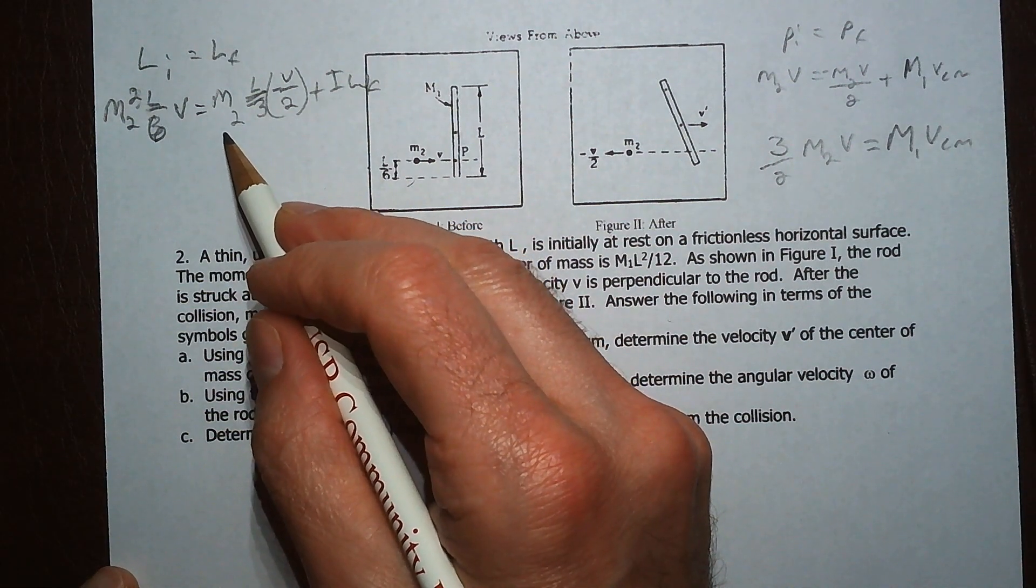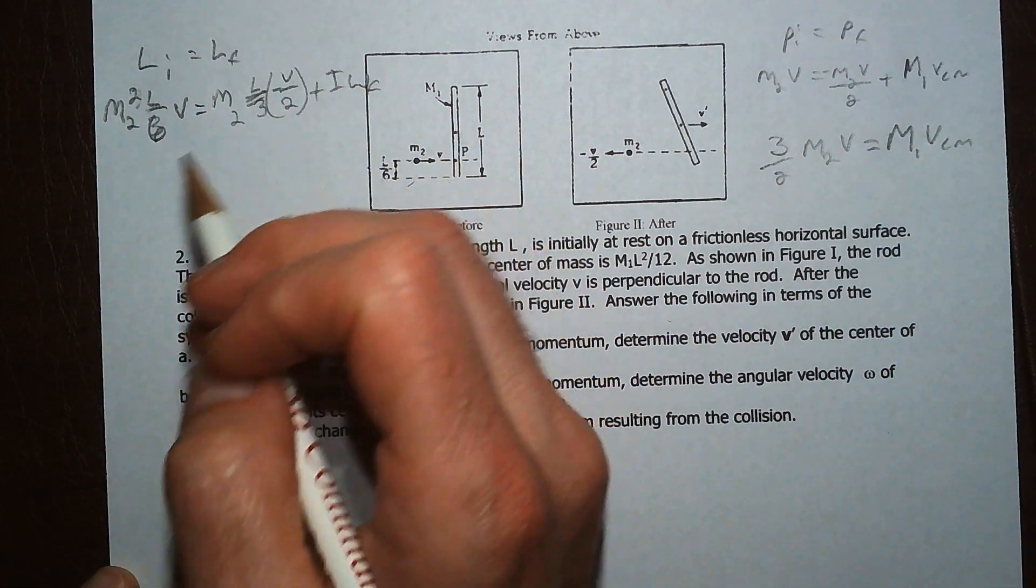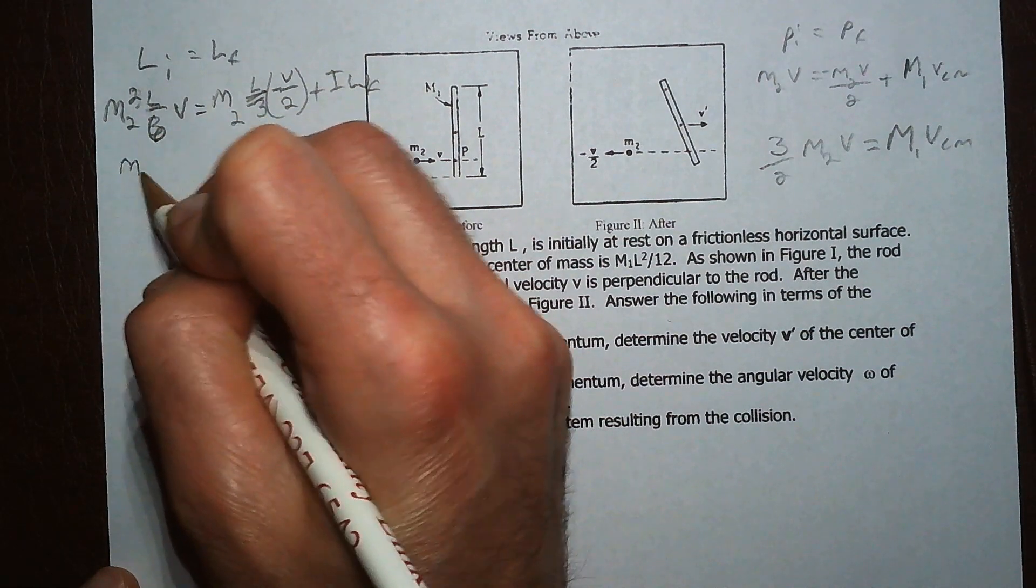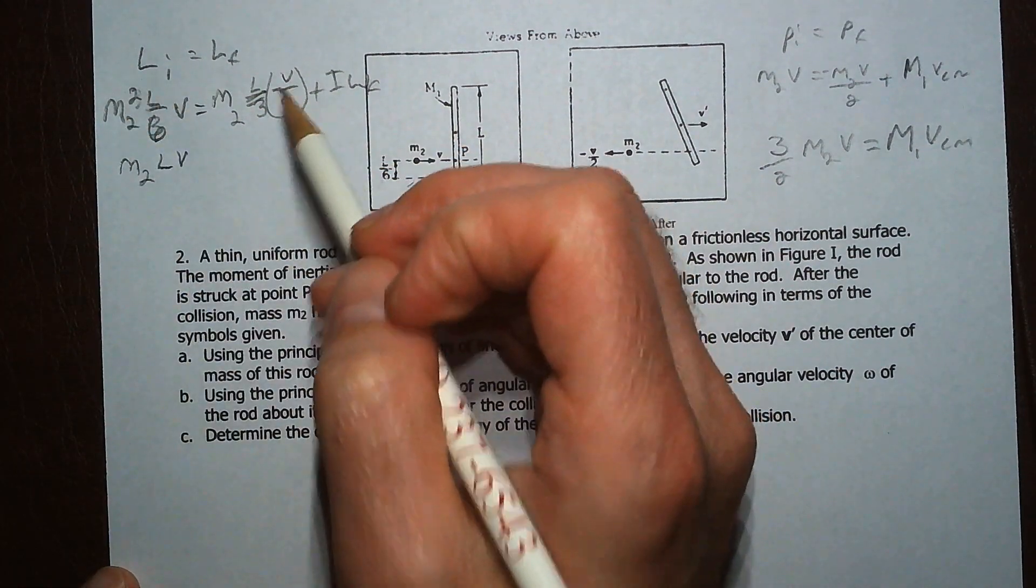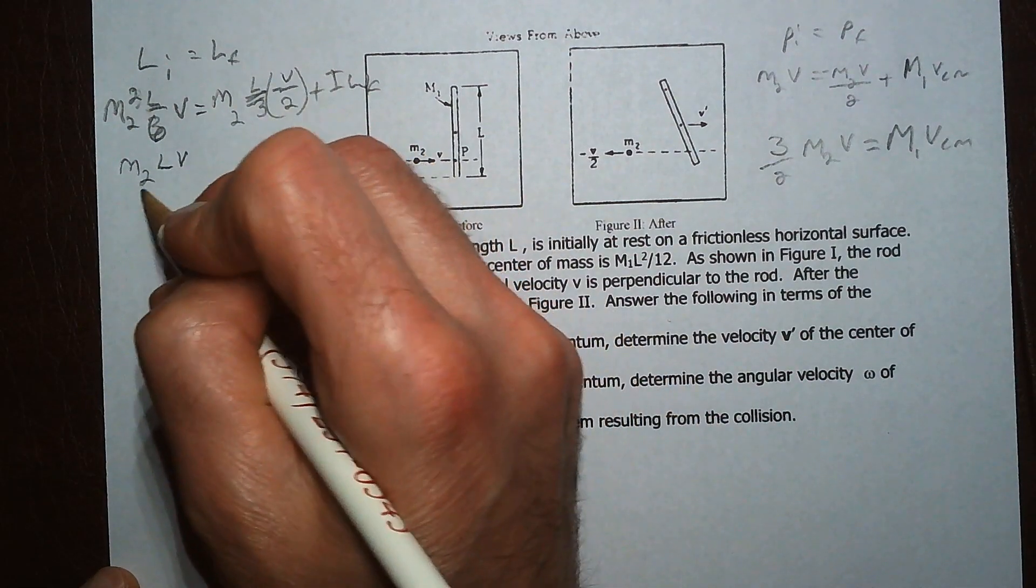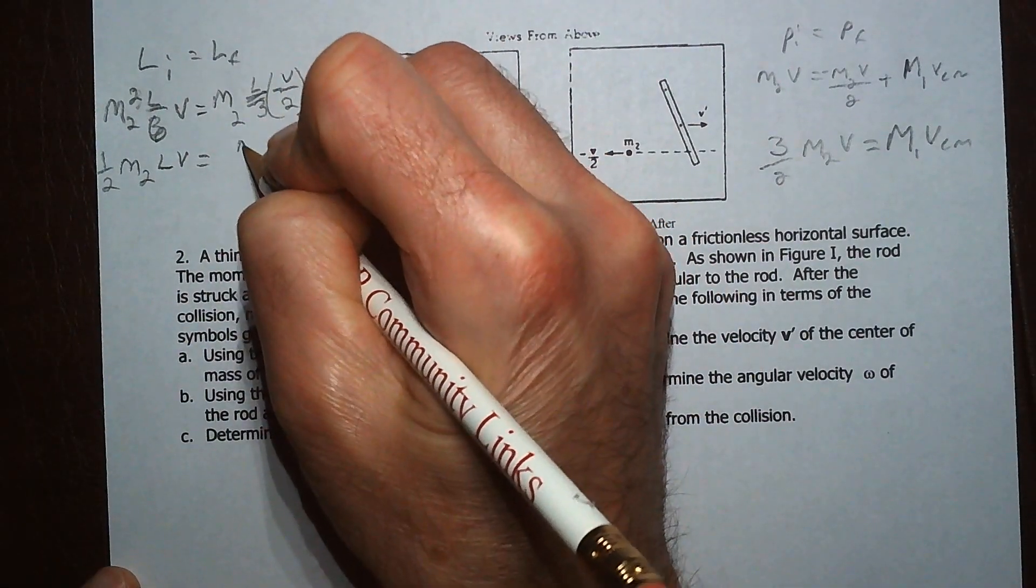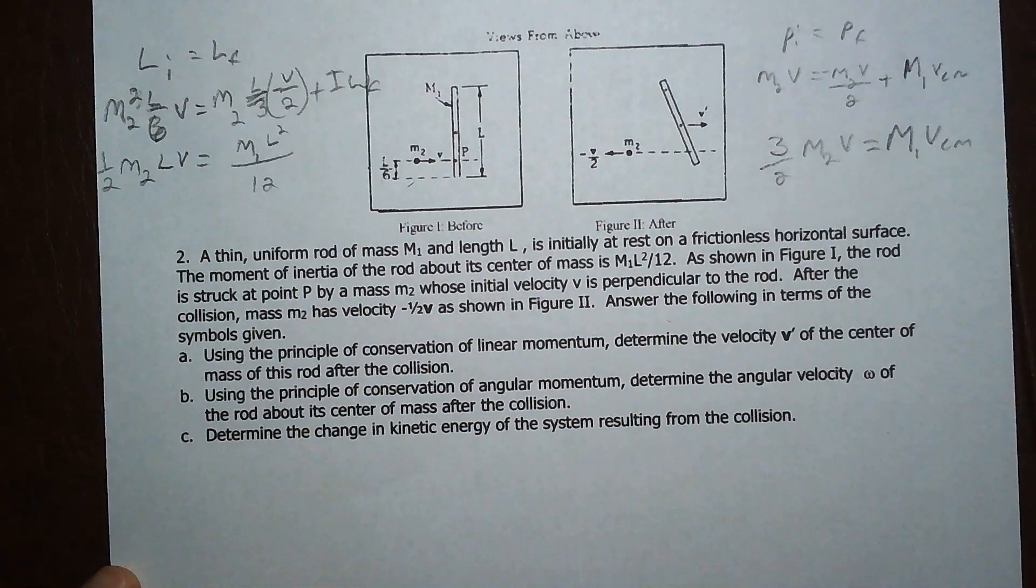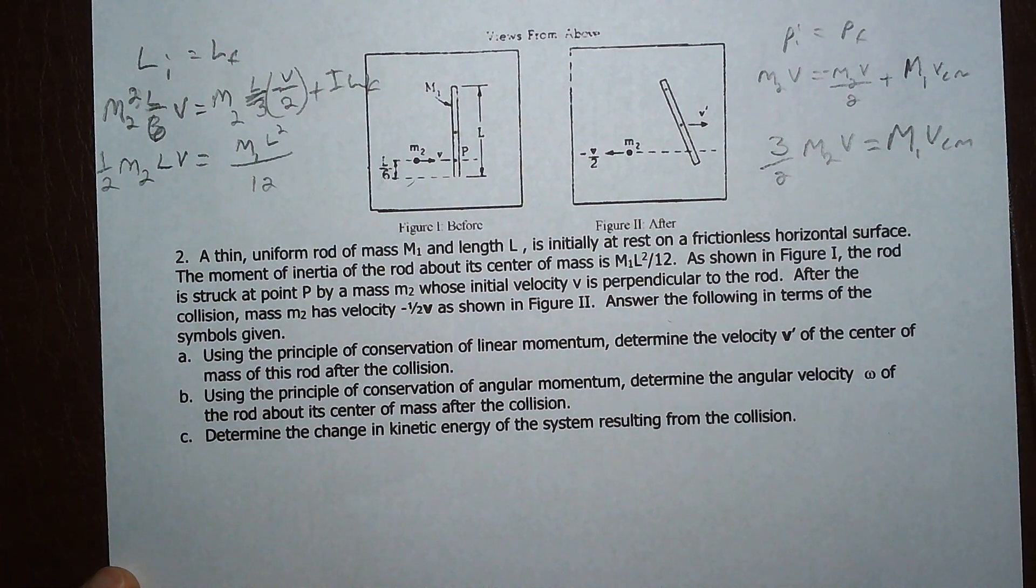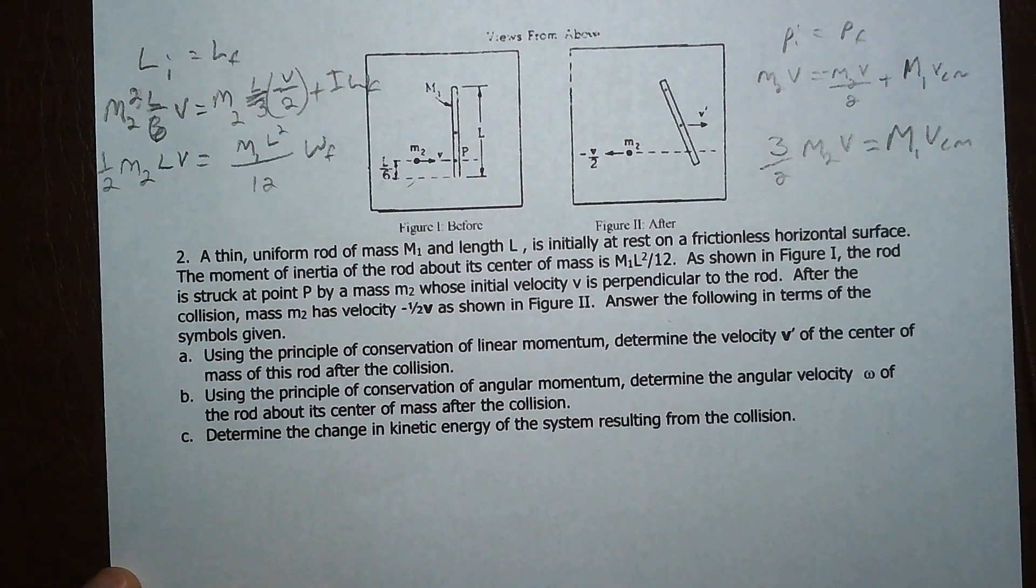So it's going to be M2LV. This is 2, 6, 3, 6, that's a half, so 1 half equals M1L squared over 12 times omega final. Are we trying to be, yes, omega final. So we can solve this now for omega final.